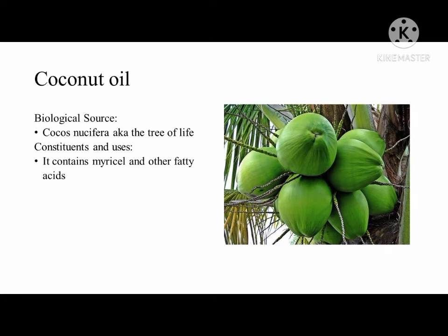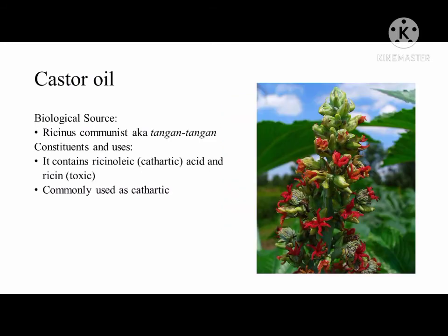Next is coconut oil with biological source Cocos nucifera, also known as the tree of life. It contains myristic acid and other fatty acids. Another is castor oil with biological source Ricinus communis, locally known as Tangantangan. It contains ricinoleic acid, which is the cathartic principle, and ricin, the toxic principle. It is commonly used as a cathartic.